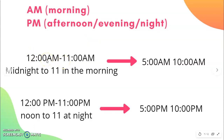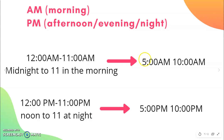12 AM is midnight. AM covers from midnight to 11 o'clock in the morning. For example, if I say 5 AM, I know that this is 5 o'clock in the morning. Here also, 10 AM means 10 o'clock in the morning.